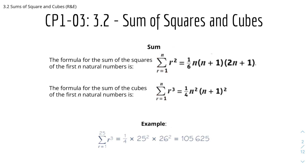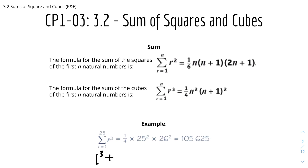Here's an example for the sum of cubes. The sum of r cubed from r equals 1 to r equals 25 is equal to one-quarter times 25 squared — because 25 is n — times (25+1) squared, so 26 squared. Visually, this means we are summing 1 cubed plus 2 cubed plus 3 cubed, continuing until 24 cubed plus 25 cubed.